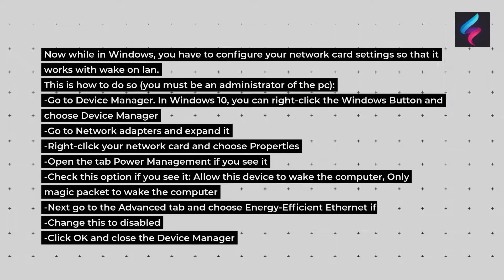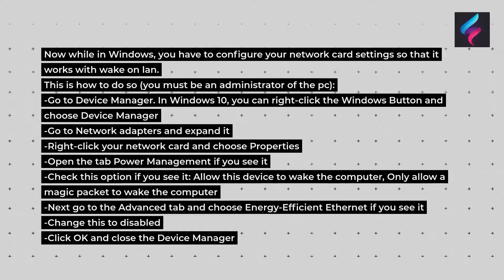Now while in Windows, you have to configure your network card settings so that it works with Wake on LAN. You must be an administrator of the PC. Go to Device Manager — in Windows 10, you can right-click the Windows button and choose Device Manager. Go to Network Adapters and expand it. Right-click your network card and choose Properties. Open the Power Management tab if you see it, and check the options: allow this device to wake the computer, and only allow a magic packet to wake the computer. Next, go to the Advanced tab and choose Energy Efficient Ethernet — if you see it, change this to Disabled. Click OK and close the Device Manager.